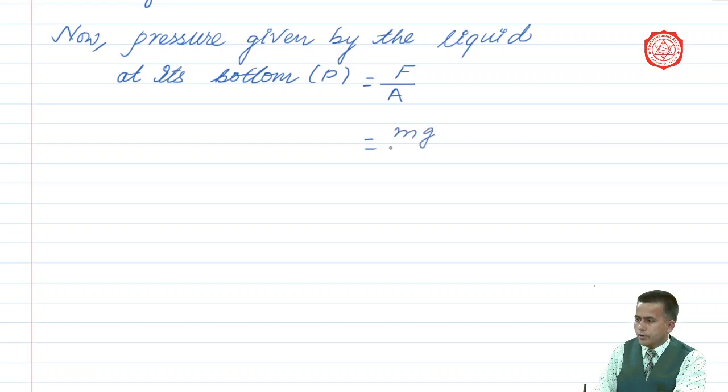And please write down why the symbols are being used here. Because F is the weight, this equals mg, and again it is also equal to volume times density times g, that is Vdg, whole divided by A.